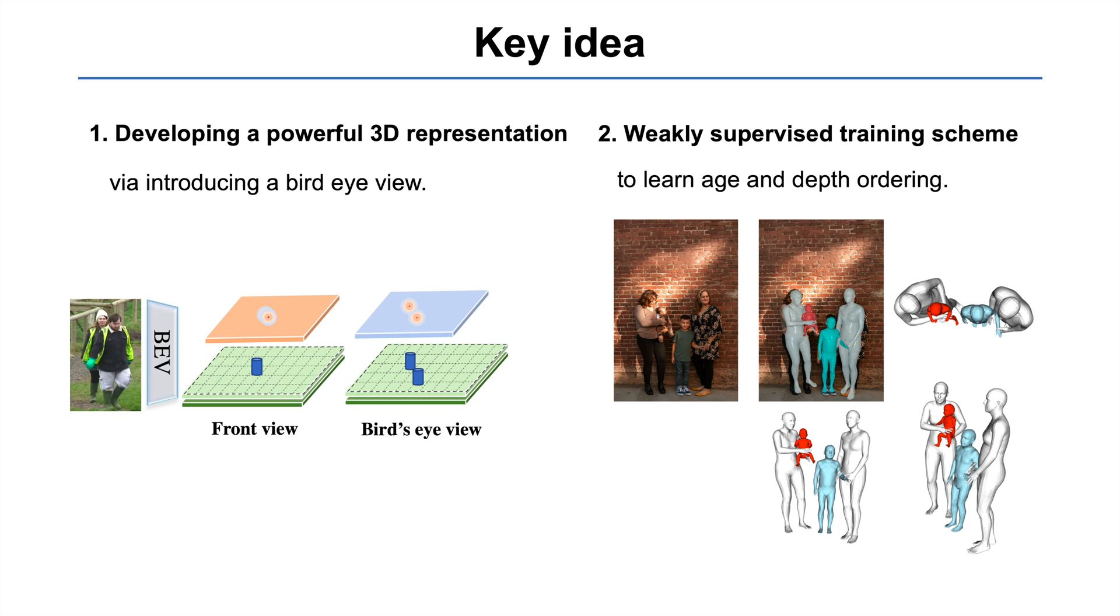Accurate 3D annotations for humans in images in the wild are limited. To train our 3D representation, we develop a weakly supervised training scheme. This enables BEV to learn age and depth ordering from weak annotations.